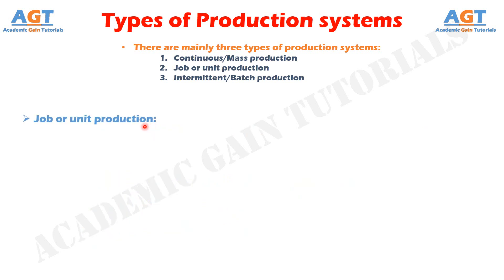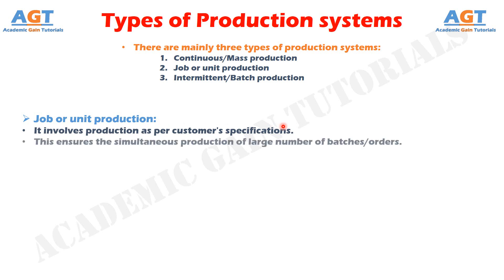Job or unit production involves production as per customer's specifications. This ensures the simultaneous production of a large number of batches or orders. Each batch or order comprises a small lot of identical products and is different from other batches. It requires comparatively smaller investment in machines and equipment. It is flexible and can be adapted to changes in product design and order size without much inconvenience. This system is most suitable where heterogeneous products are produced against specific orders.